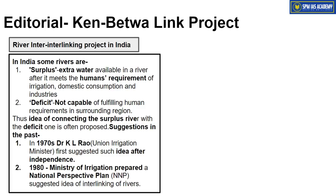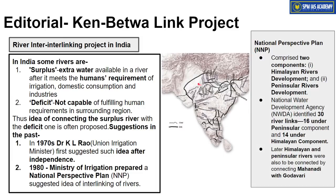After independence, the first such suggestion was given by Dr. K.L. Rao in the 1970s, who was India's Union Irrigation Minister at that time — today it is the Ministry of Jal Shakti. He proposed connecting surplus rivers to deficit rivers. This concept was later rebuilt and developed into the National Perspective Plan by the Ministry of Irrigation, which discussed in detail how India's rivers could be interlinked to solve surplus and deficit problems.